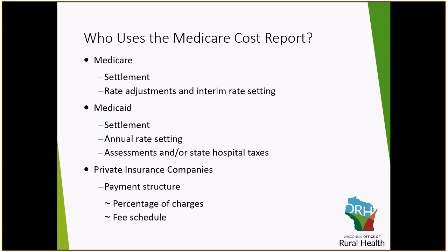Medicare is obviously the main user of the cost report. They use this to determine the cost settlement at the end of the year — whether the hospital facility is owed money from Medicare or they potentially owe Medicare money, depending on how the end-of-year settlement comes out. The cost report is also used to determine your interim rates and can be used to file rate adjustments throughout the year if you're going to be filing interim cost reports. Definitely at the end of the year, your rate will get updated based on the results of that cost report. Different state Medicaid programs also use the Medicare cost report for potentially cost settlement, annual rate setting.